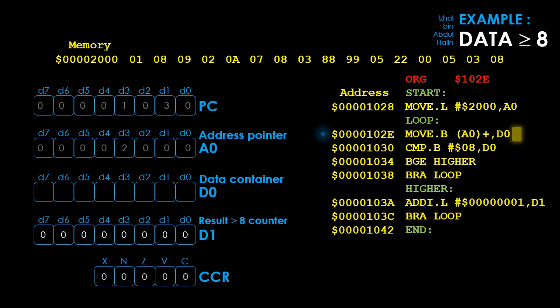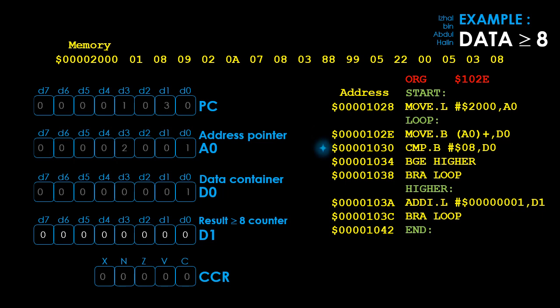The program counter is now pointing to address 102E. Before executing, the program counter is updated to point to the next instruction's address 1030. The instruction MOVB (A0)+, D0 is executed. Since A0 is pointing to address 2000, the corresponding data with a value of 1 is copied into register D0. The status register is updated to 00000. Then A0 is incremented by 1. Next, the compare instruction comparing immediate value 8 with D0 is executed — the 68K subtracts 1 from 8, resulting in negative 7.